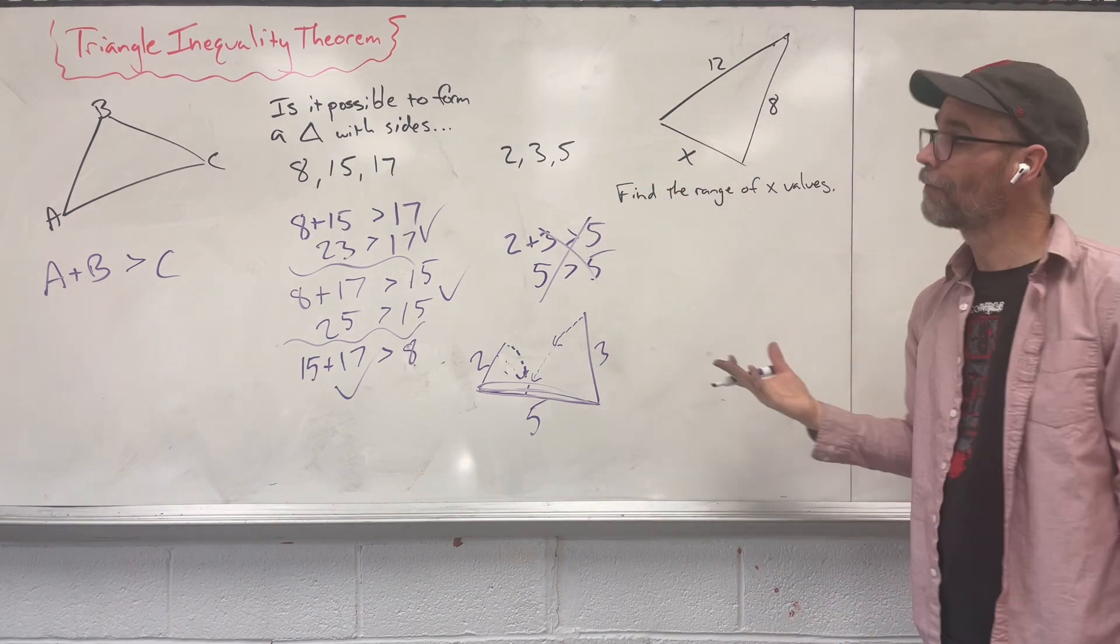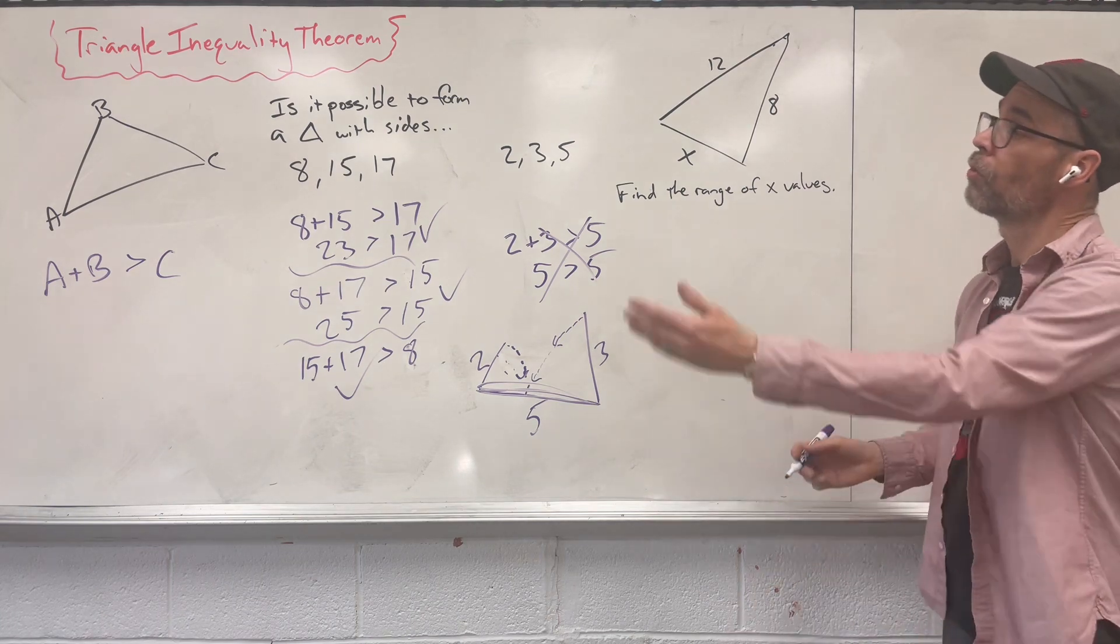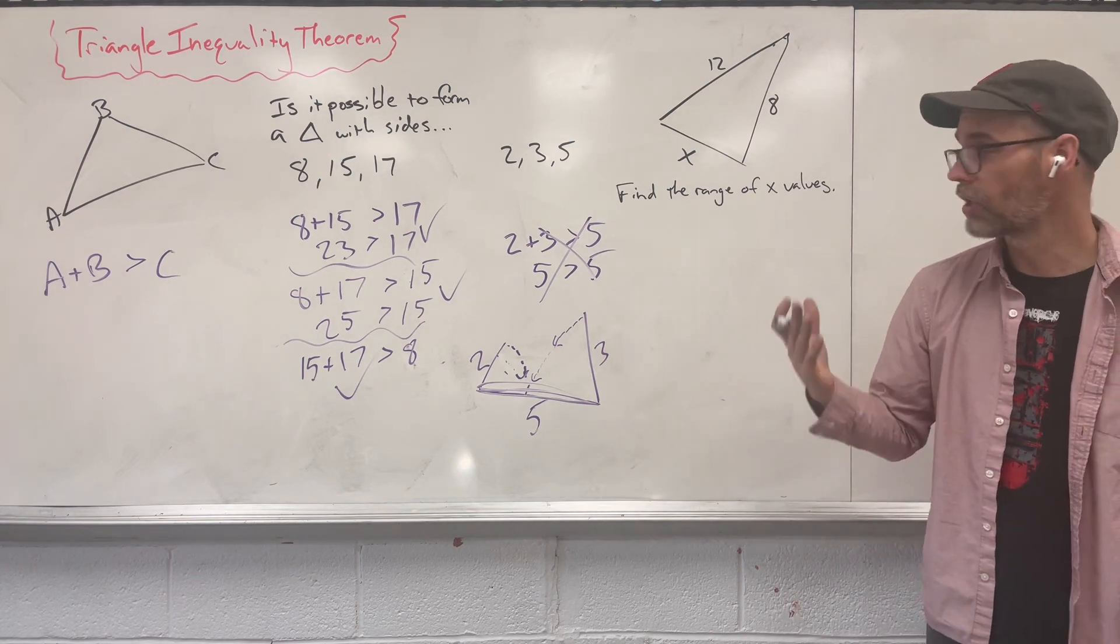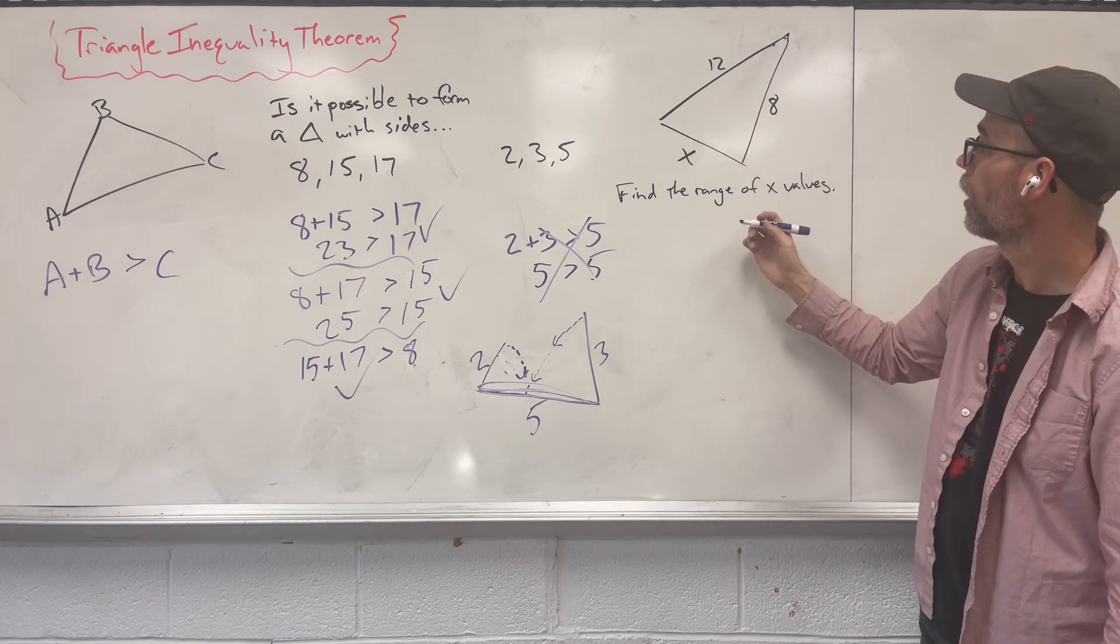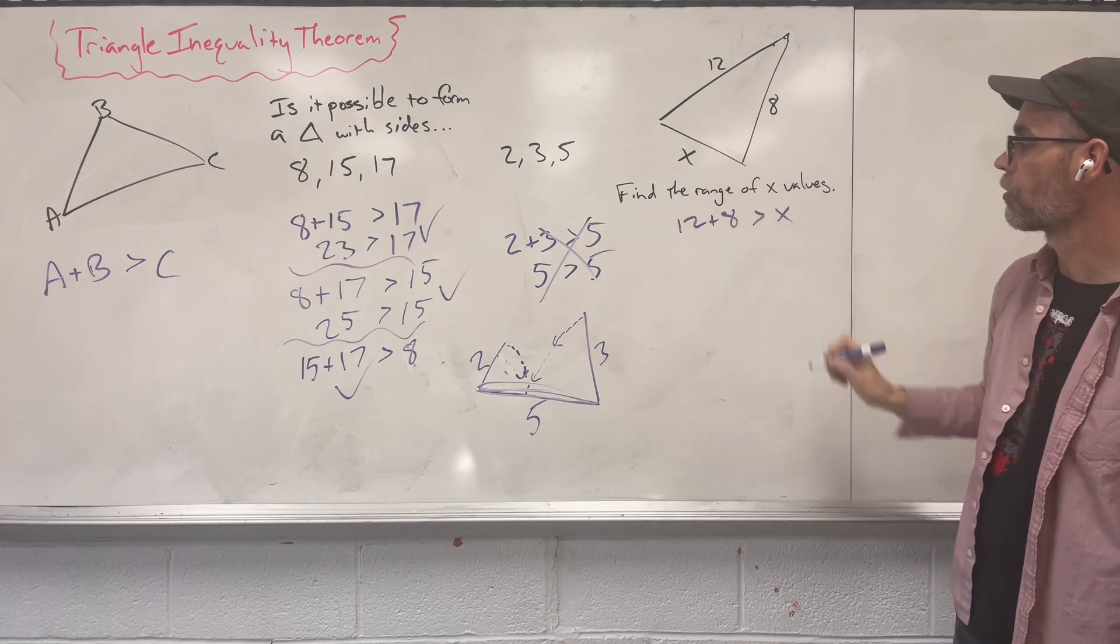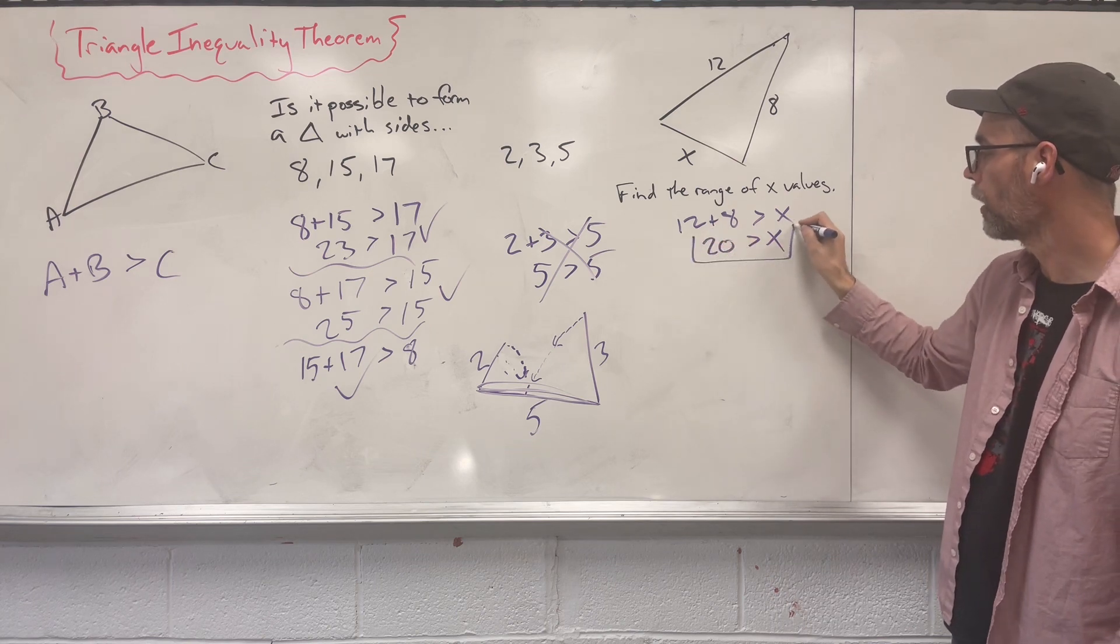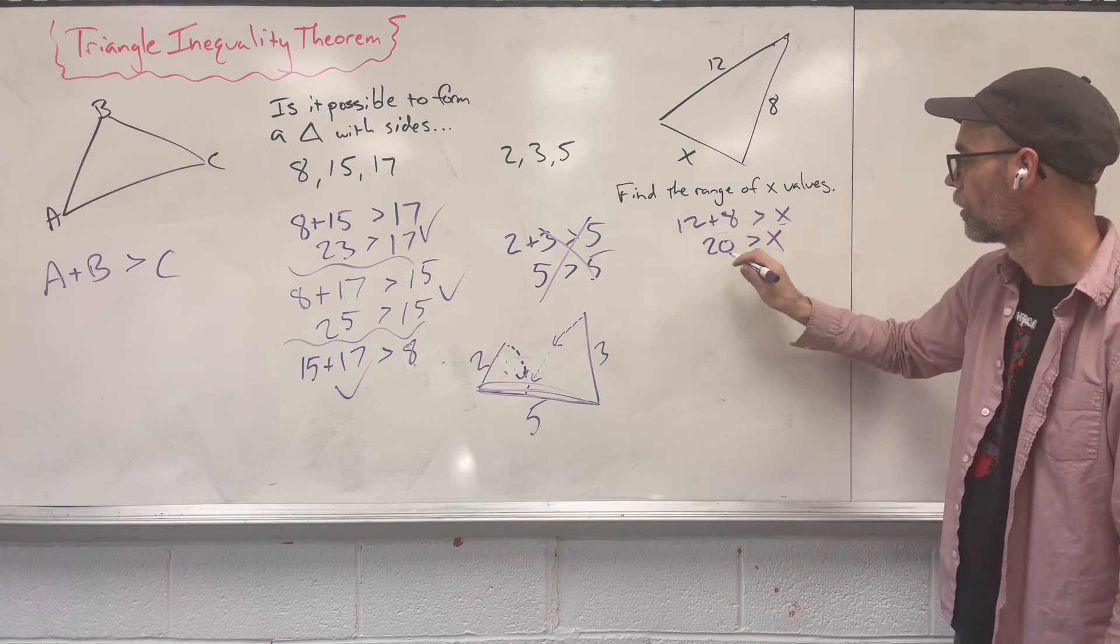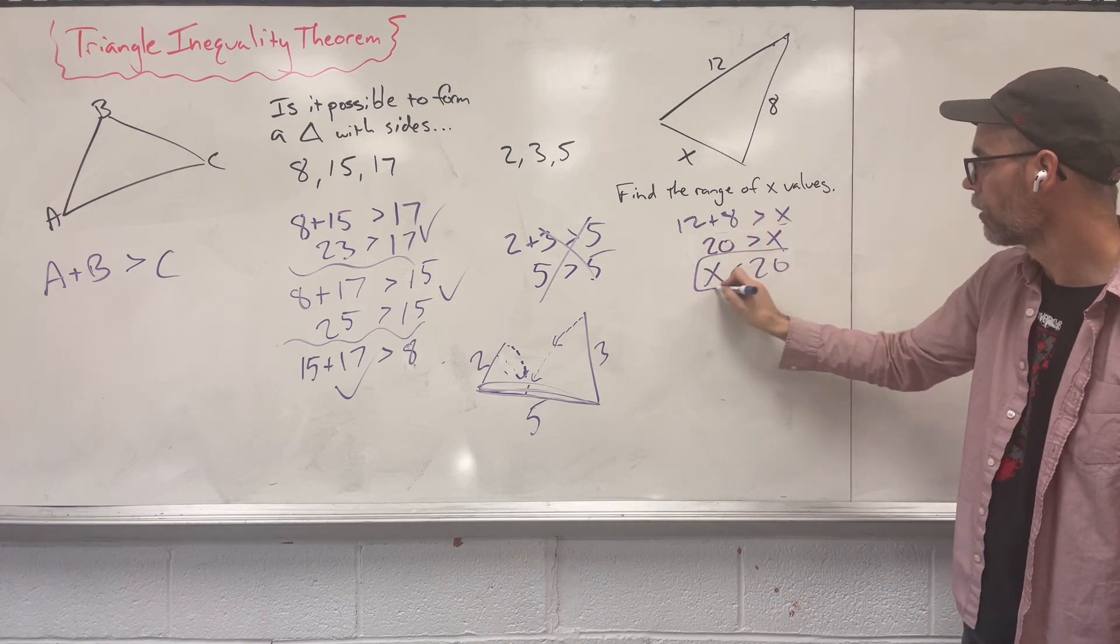What about if I have that missing side? How do I find the range of x values? Well, we do the same thing we did before. We're going to take two sides, add them up, and see if it's larger than that third value. So let's take 12 plus 8, that has to be larger than x. That gives us 20 is greater than x. Well, that's one possible range. So we say x is less than 20. So there's one answer.